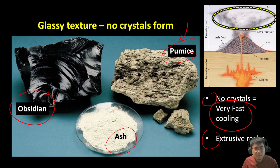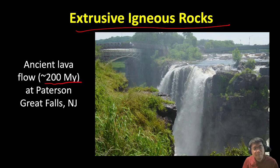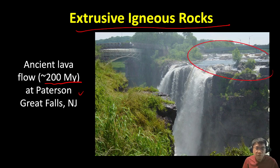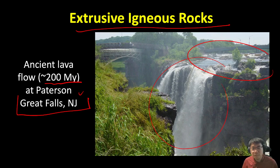We'll talk about those in more detail when we cover volcanoes later. Here is an example of extrusive igneous rocks in New Jersey — we also have ancient lava, about 200 million years old, at Paterson Great Falls in New Jersey. Here is the Passaic River, and if you travel to northern New Jersey, especially in Paterson, there's a place called the Great Falls, and you can see that this waterfall is underlain by an extrusive igneous rock called basalt.